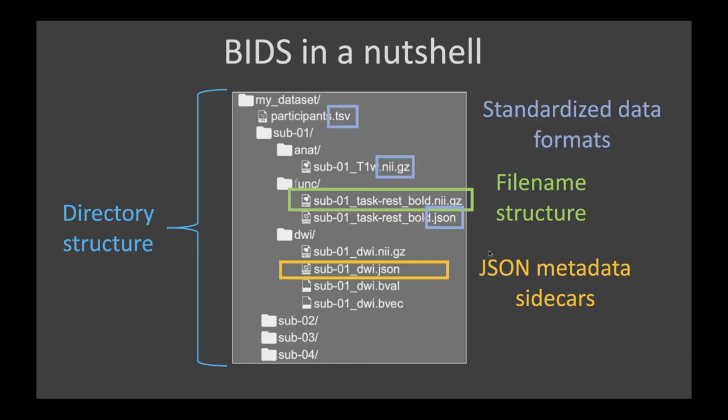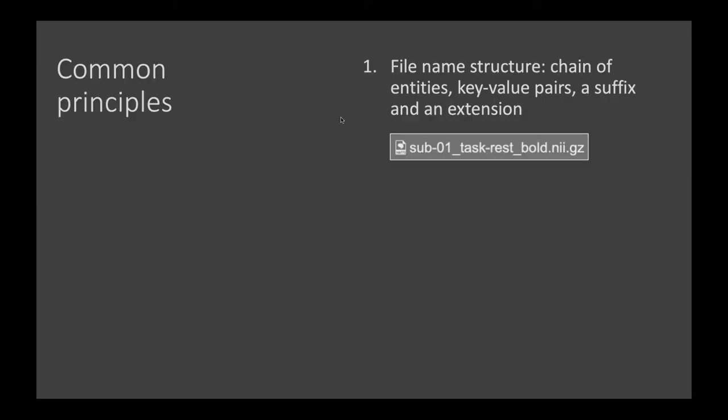We have standardized data formats — the last important ingredient. We would like to come down to a small number of file types, not a hundred different ones. This is the purpose of a standard: to agree on a common structure. The common principles are: a final structure, a chain of entities, key-value pairs with suffix and extension, and a directory structure.